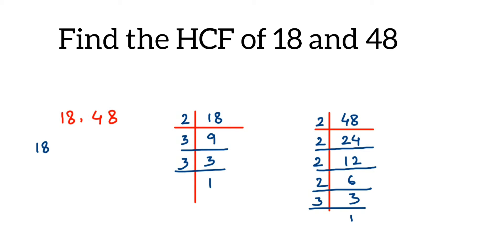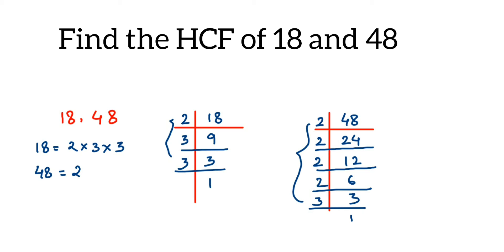This is a very important step. 18 can be written as — write down all these prime factors — 2 × 3 × 3. And 48 can be written as — again write down all these factors — 2 × 2 × 2 × 2 × 3. Now once we have this, we have to take out only the common factors.